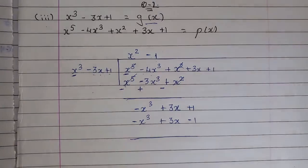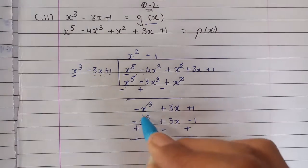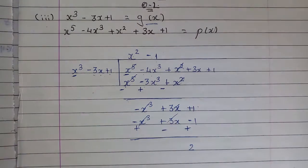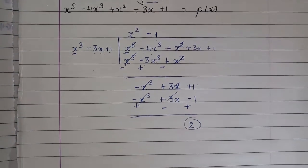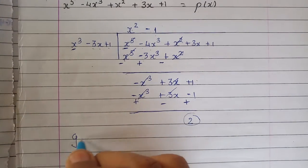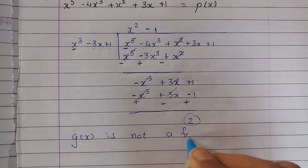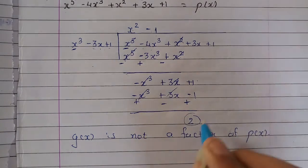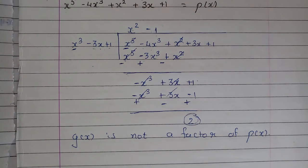-x³ minus -x³ is 0, +3x and +1, -1 plus 1 is 0. But we didn't get 0 as the remainder. That means g(x) is not a factor of p(x). Clear?